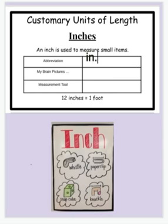When your brain associates what an inch looks like, you can picture items such as a whistle, a paper clip, a knuckle, or a snap cube. Those are all things that are about an inch long. The tool that we use to measure inches would be a tape measure or a ruler.